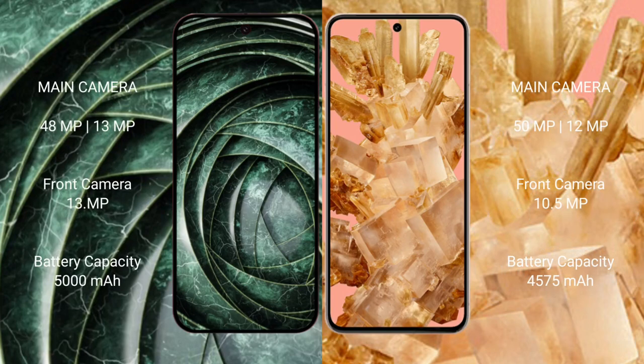Google Pixel 9a features a rear dual camera setup of 48MP plus 13MP, and a front camera of 13MP. Google Pixel 8 features a rear dual camera setup of 50MP plus 12MP, and a front camera of 10.5MP.